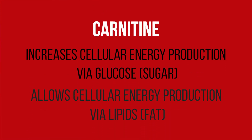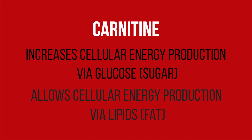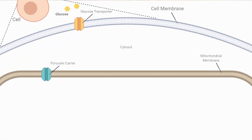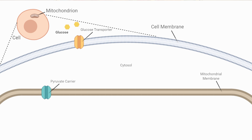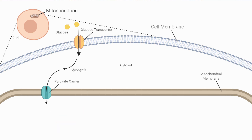Carnitine has two metabolic functions which make a dramatic impact in our cells. But for us to understand those two functions, we should come to a base understanding of bioenergetics within the cell. Blood sugar, glucose, comes into the cell to end up in the cytosol of the cell. But to be metabolized in the mitochondrion, it undergoes glycolysis, where its end product is pyruvate.